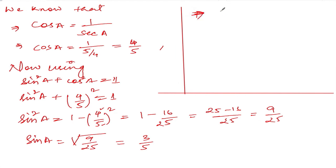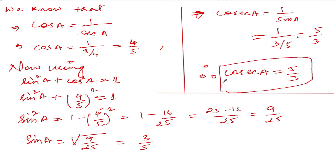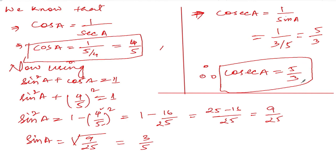Now cosec(a) = 1/sin(a), and sin(a) = 3/5, so cosec(a) = 1 ÷ (3/5) = 5/3. Therefore cosec(a) = 5/3. So our final answers are: cos(a) = 4/5 and cosec(a) = 5/3. That's all, thank you so much, we will meet in the next video.